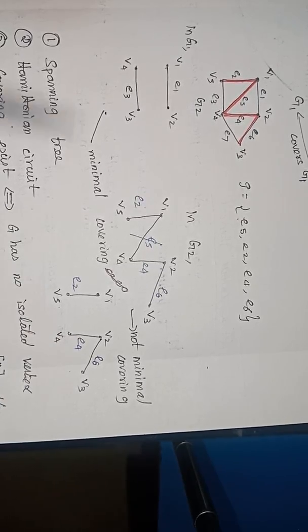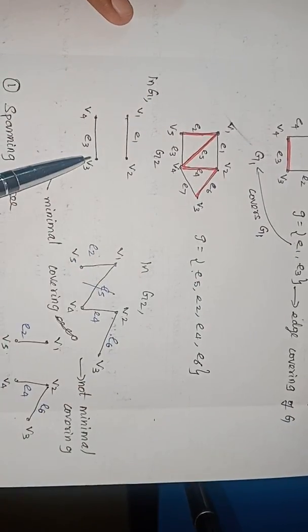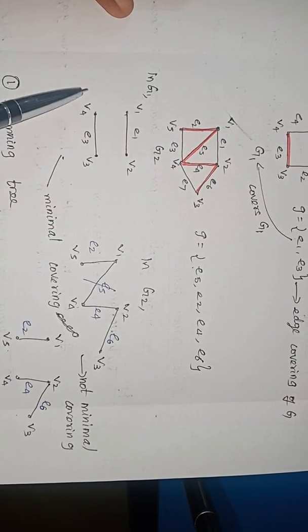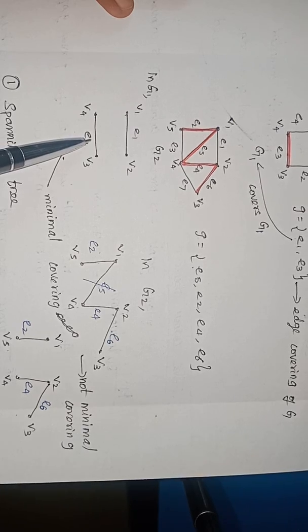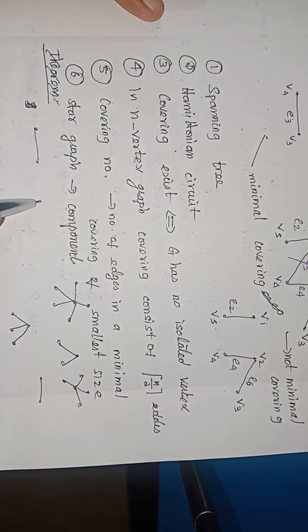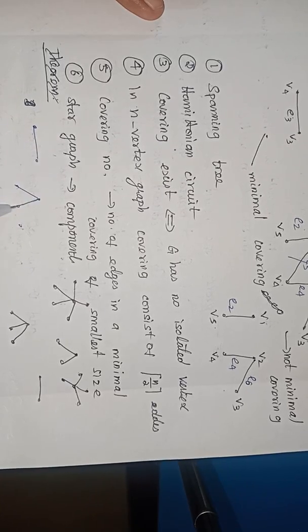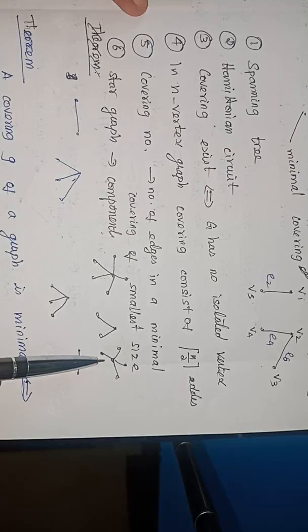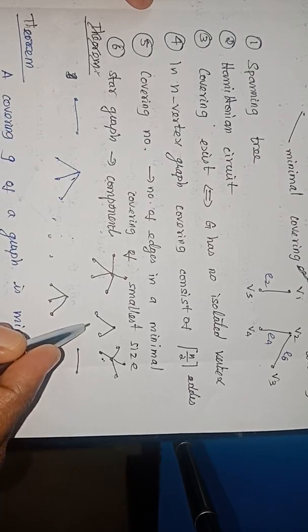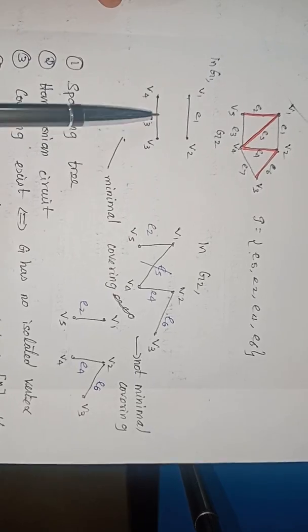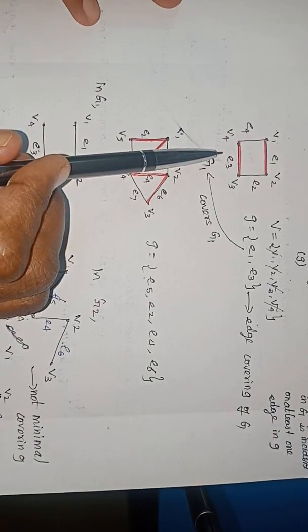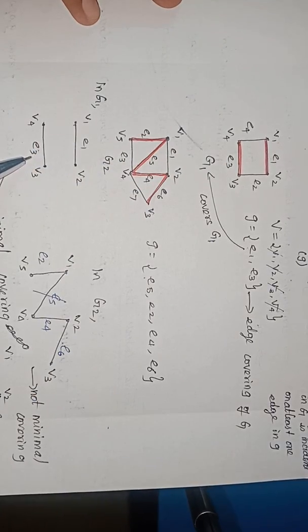Now, whenever you try to draw the covering as a subgraph for G1, let me draw E1 and E3, and I will be getting two components. Both of them are star graphs. A star graph with two vertices, three vertices, four vertices, etc. When you see the covering drawn separately, the components will be a star graph.